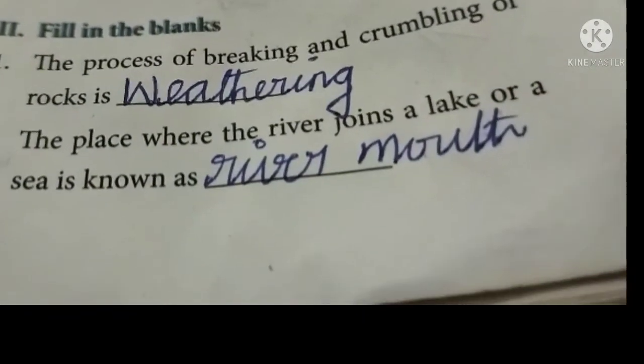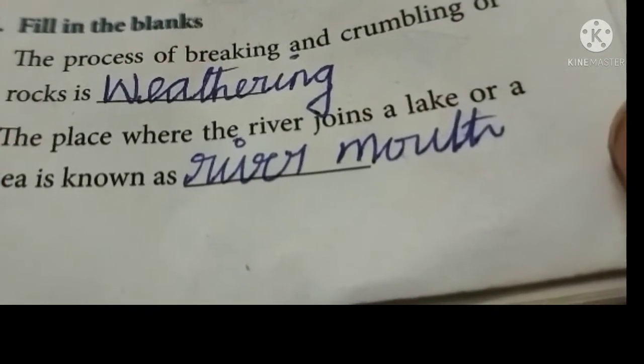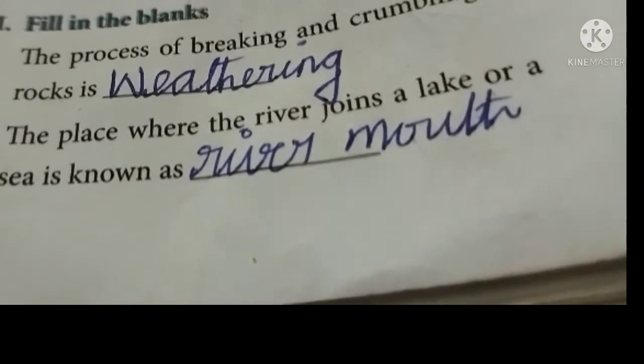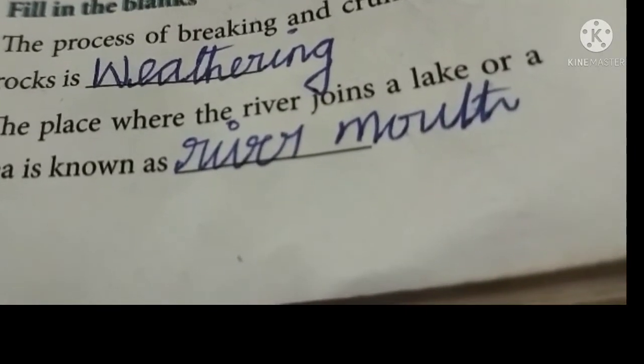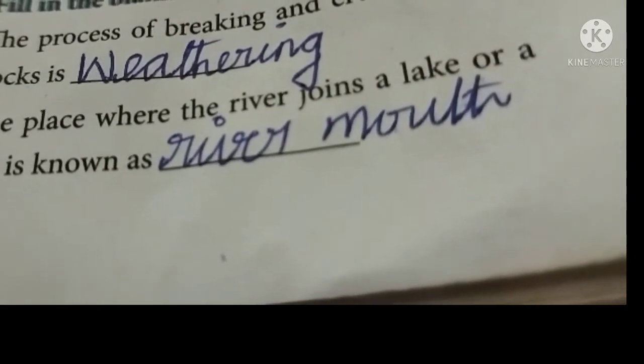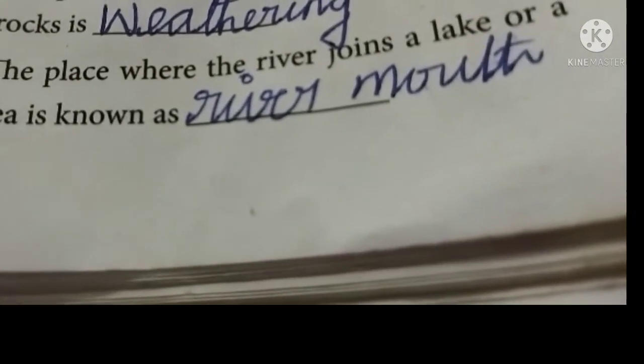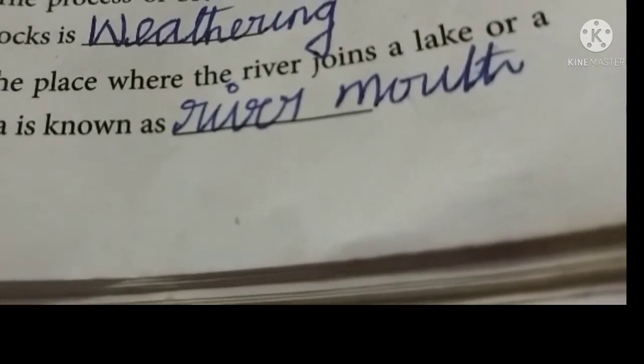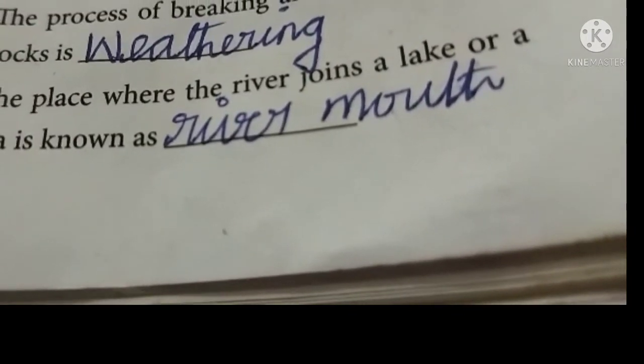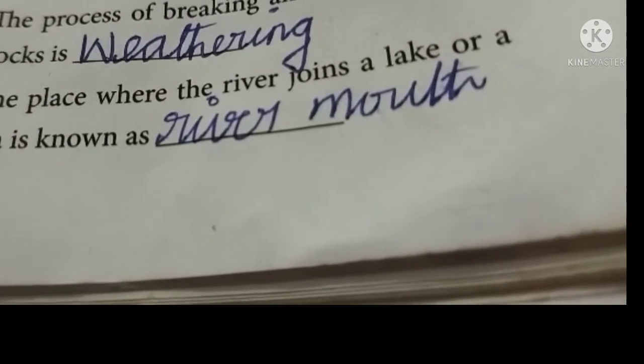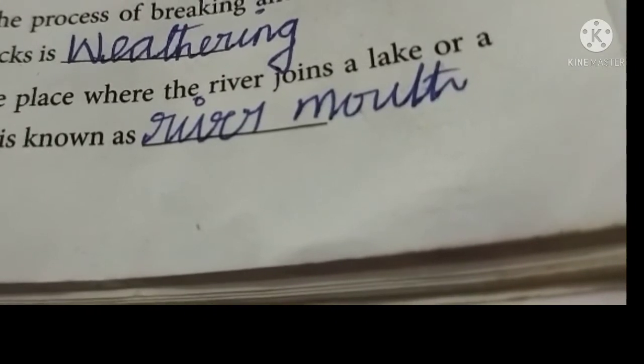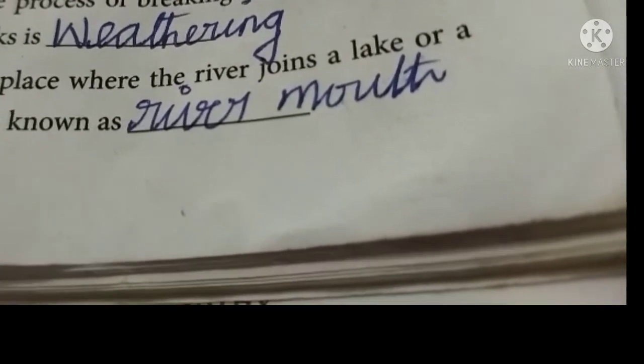Next, fill in the blanks. The process of breaking and crumbling of rock is dash. The answer is weathering, W-E-A-T-H-E-R-I-N-G, weathering. Then second one, the place where the river joins a lake or a sea is known as river mouth, R-I-V-E-R-M-O-U-T-H.